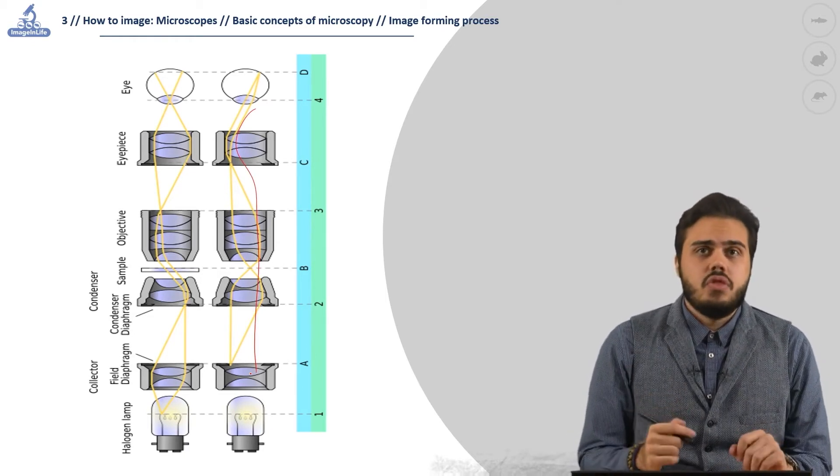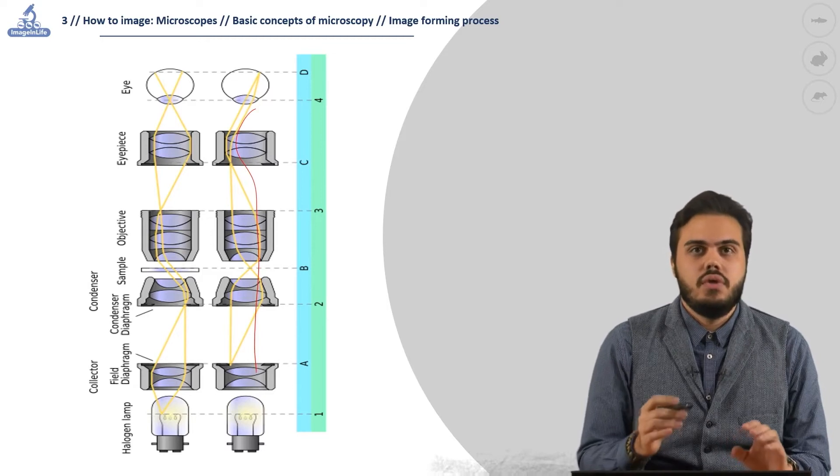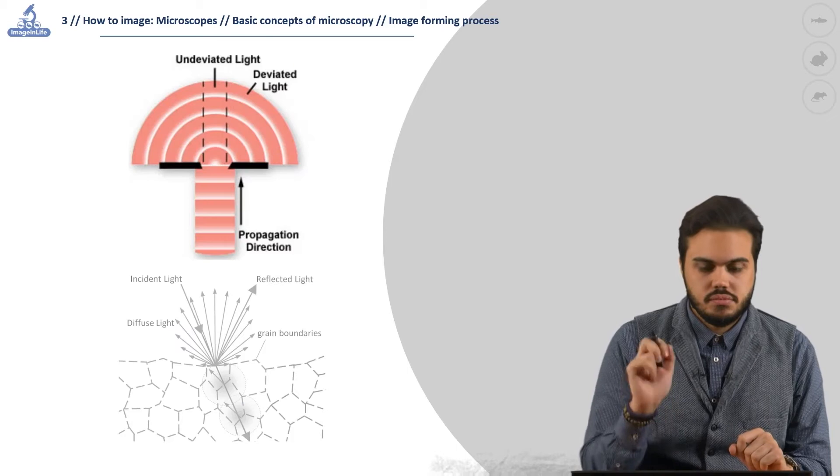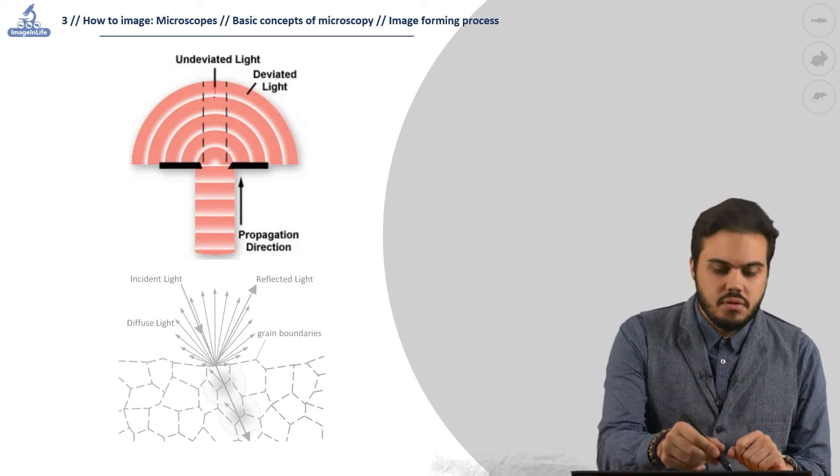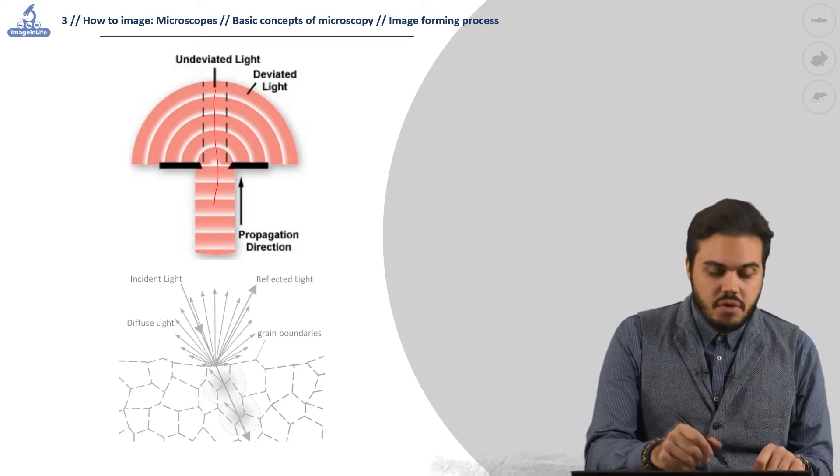In this way, the observer or the camera will never look directly at the image of the light source, having a better image. The light that hits the specimen can pass it directly, usually in the central area, or be diffracted by the specimen.